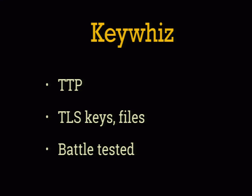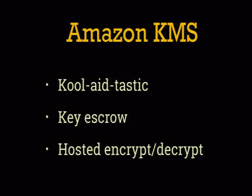Slightly older is Square's KeyWhiz. It has a more limited data model than HashiCorp Vault and a more limited API, but that means it's been tested to a much higher degree because there are fewer ways to use it. KeyWhiz excels — as you might imagine from the name — at key-type secrets, though you can use it for passwords and tokens with a bit more complicated integration.